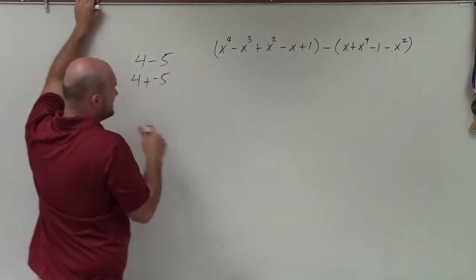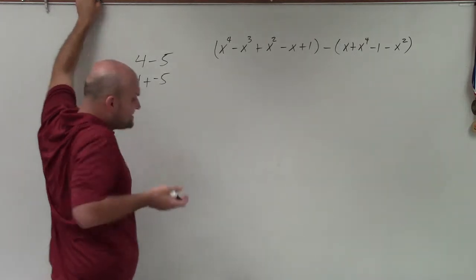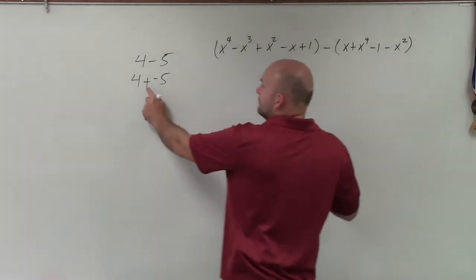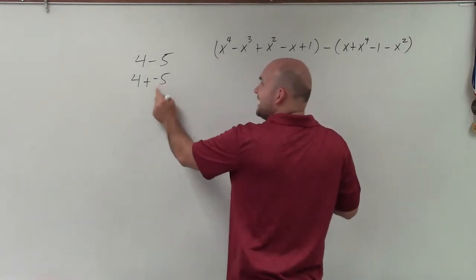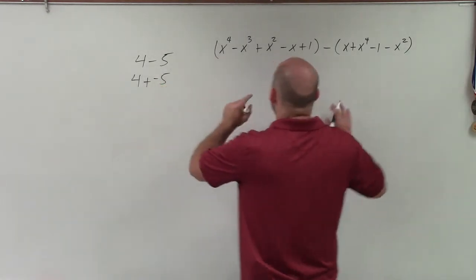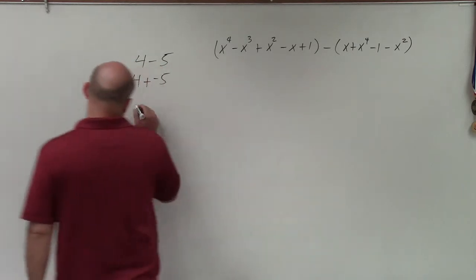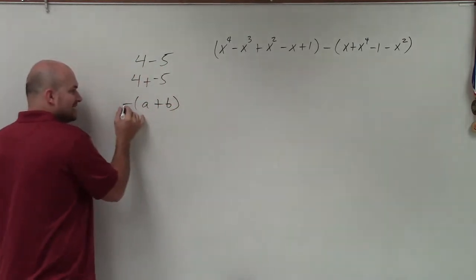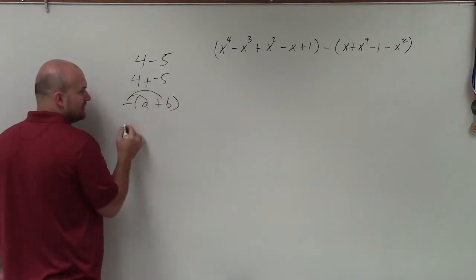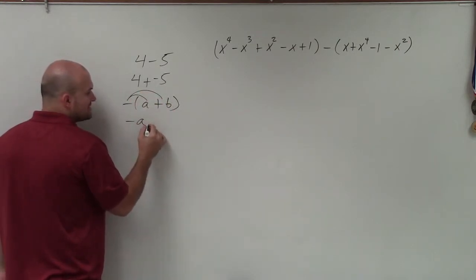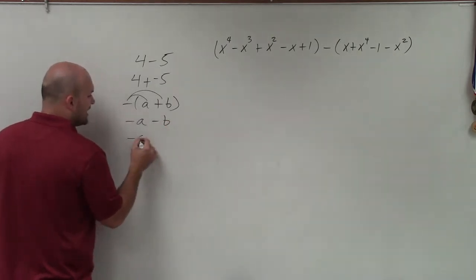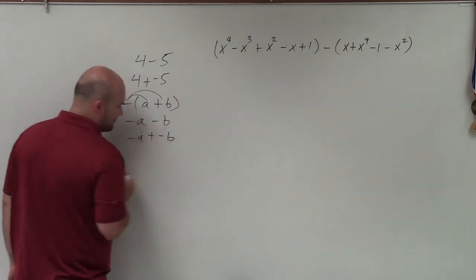And what I'm basically doing is I am taking this and adding it to the negative value of my number. Now, the same thing works when we have distributive property. If I have a plus b and it's times negative, well, that negative can be distributed to all of those terms. So now it's negative a minus b, or negative a plus negative b.